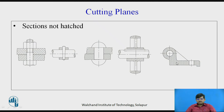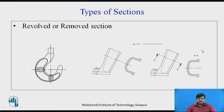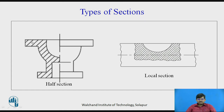Types of sections include: revolved section, where the cross section is revolved to show the cross-section with hatching; removed section, where only the cross section is drawn separately with hatching; half section, where half the view is shown as a sectional view; and local section, where you want to show hidden details at a specific point without sectioning the entire body — only the specified portion is sectioned.